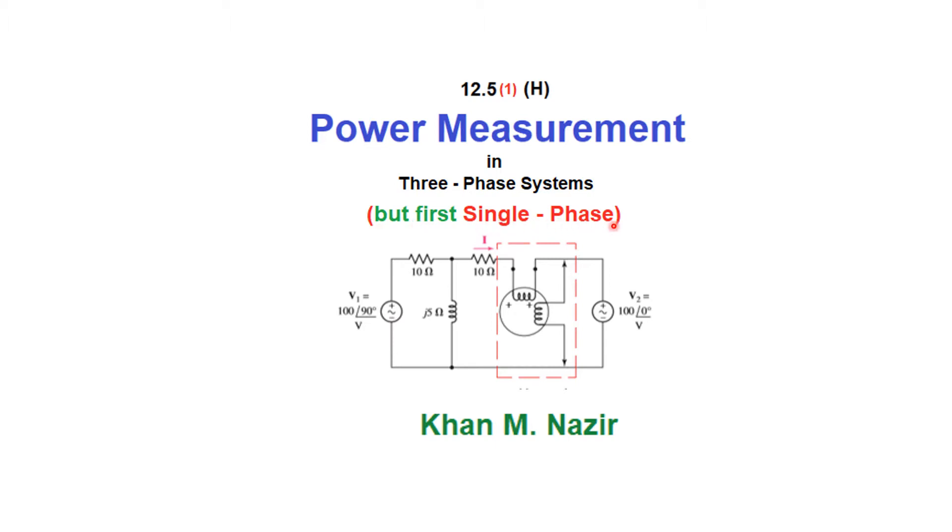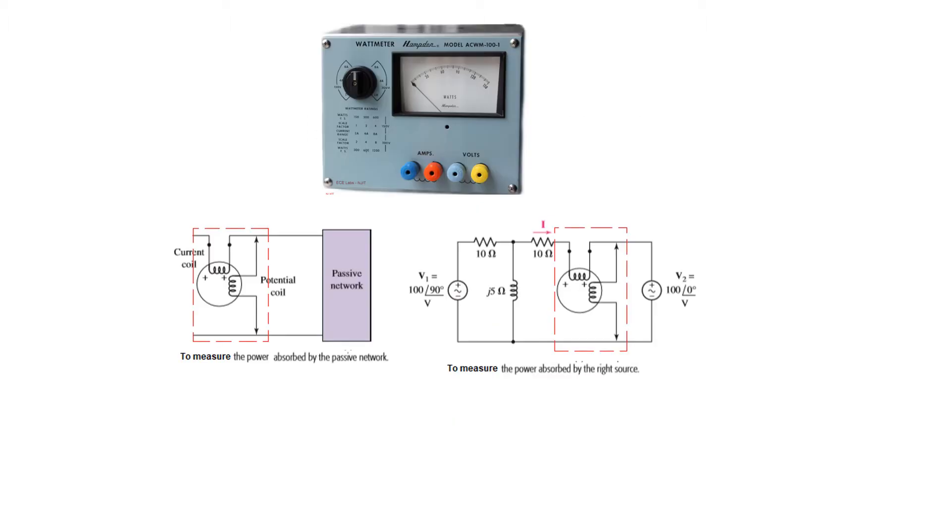Now this is the power meter. Please note that it has four terminals: two for the current (this is the ampere terminal or current terminal) and two for the voltage.